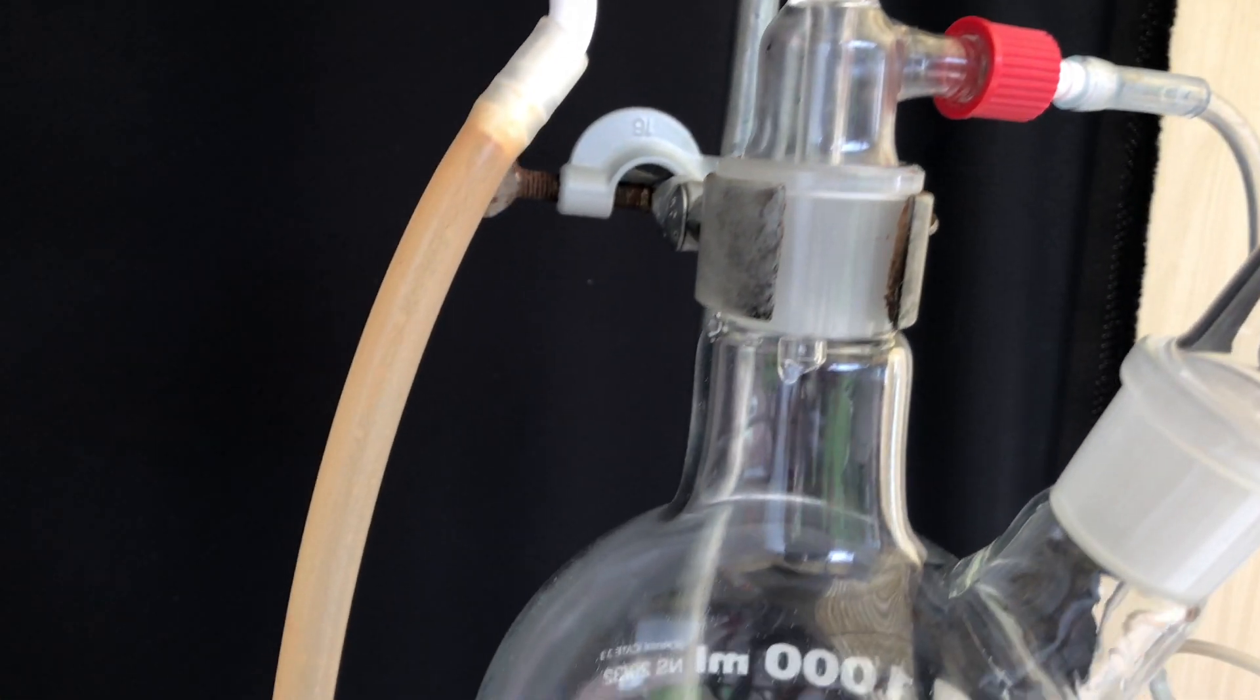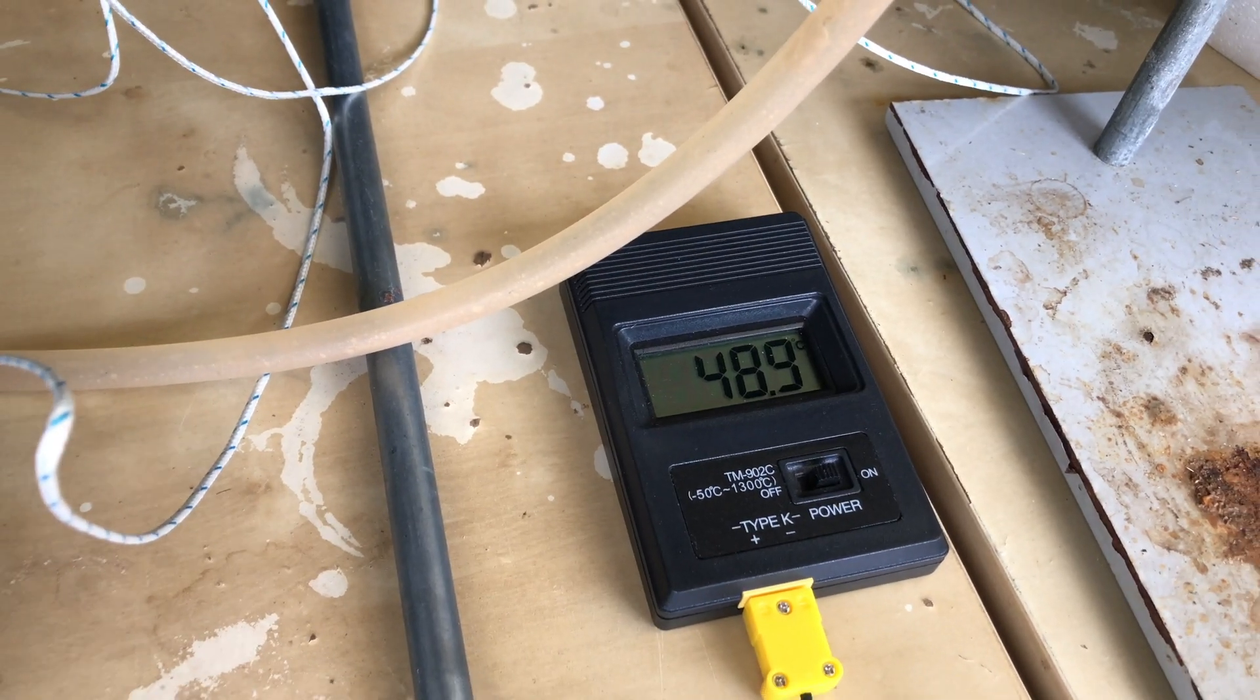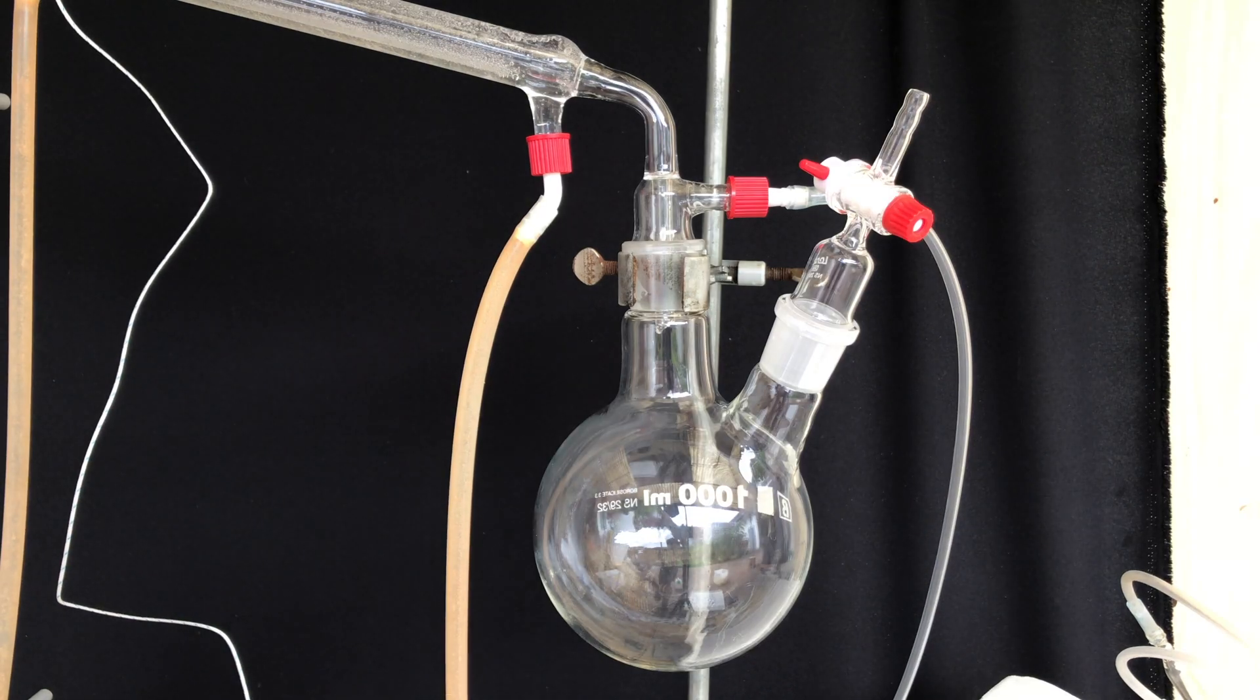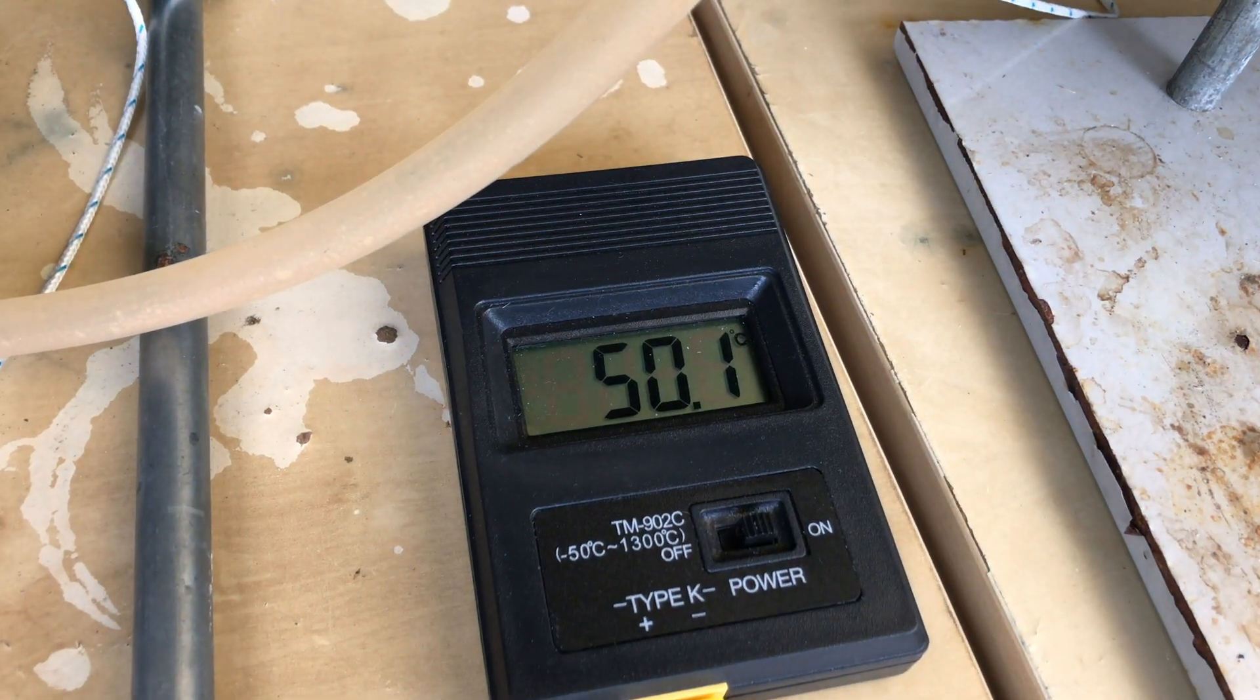Heating and stirring were turned on and after a few seconds the first drops of liquid came over. When the temperature at the top reached 84 degrees celsius I swapped out the collection flasks.